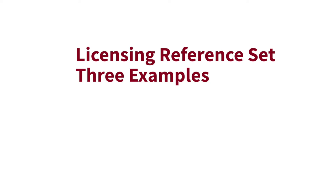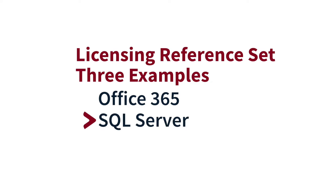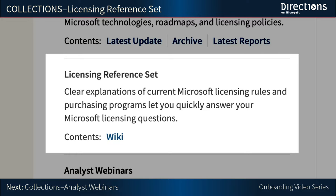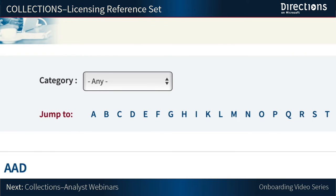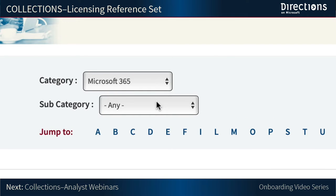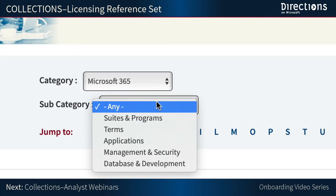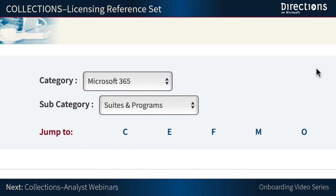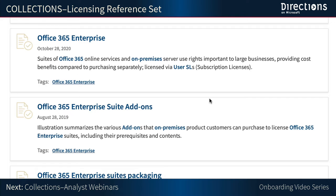Let's start with the first of three examples: Office 365, followed by SQL Server, then Azure. To find what you are looking for, you can use category menus. For example, let's say you need to get up to speed on licensing for Office 365 Enterprise. You can choose the category Microsoft 365 and filter down by subcategory Suites and Programs. Click the letter O and Office 365 Enterprise.